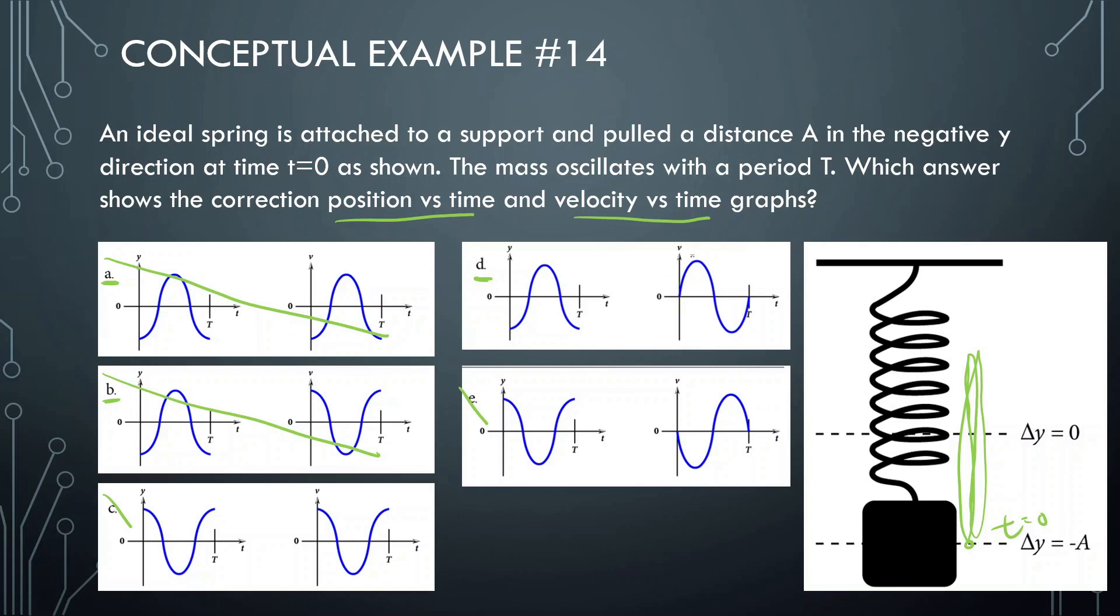But it's going to be d. d starts with 0 velocity, it goes up, it's going fast, and then it's going to slow to a stop, and then it's going to go in the other way. So d is the correct answer.